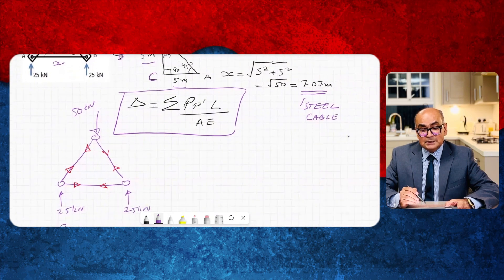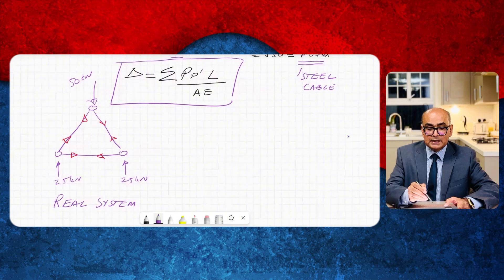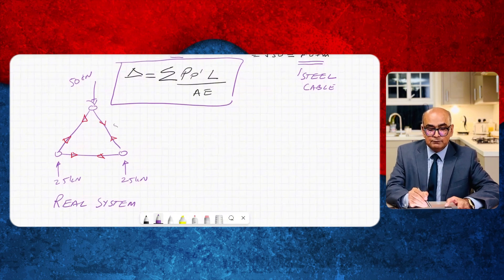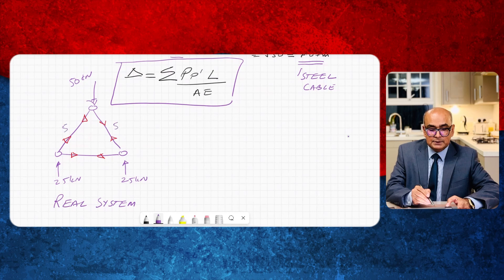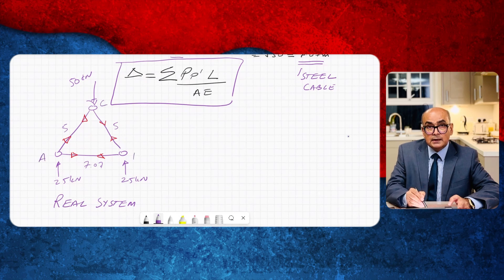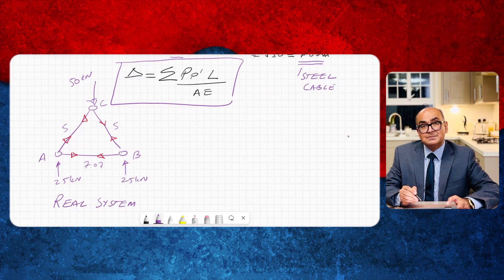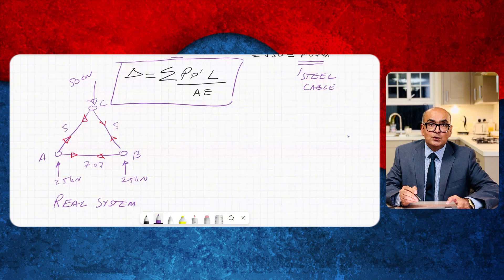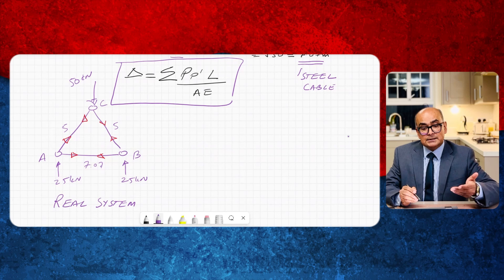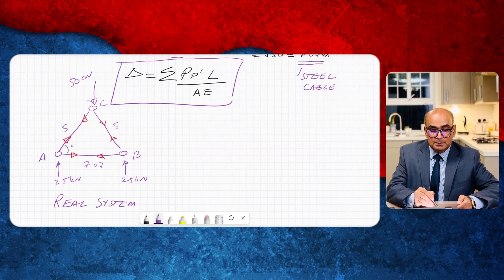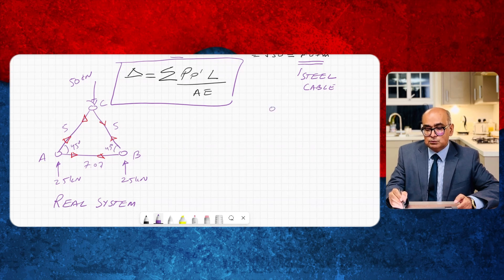We have to create the real system and virtual system. In real system actual loads are applied and we have the actual lengths five meter, five meter and seven point zero seven. This joint was C, this is A and this is B. Virtual system is a system where we apply a unit load at a point where deflection is needed. Here the deflection is needed at apex or point C and we will find out deflection over here.